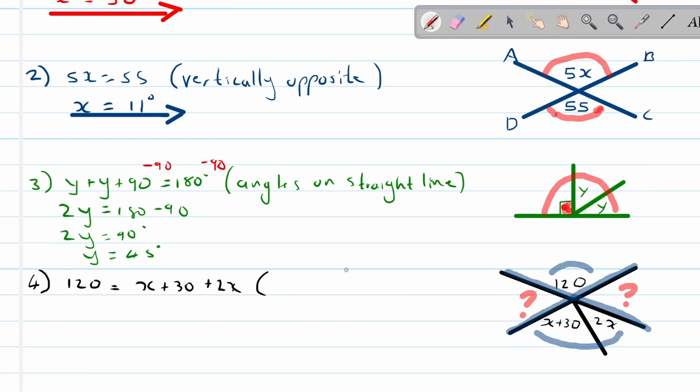So over here we can make a statement and say 120 is equal to x plus 30 plus 2x. Why can we make that statement? Because of our reason being vertically opposite angles. And then from there on it's just our simplification. So over here we've got an x plus a 2x is equal to 3x plus 30. On the left hand side we've got 120.